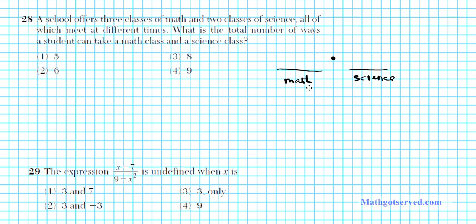The student is taking math and science. So that 'and' in counting is represented by multiplication. How many different classes are there for math? There are three math classes. And then, how many science classes are there? There's two. So the total number of ways a student can take a class is simply three times two, which is six.